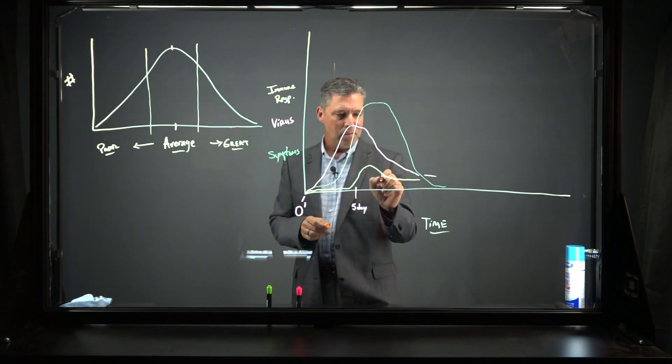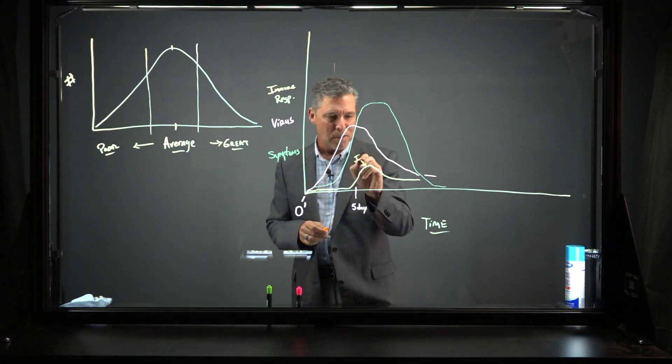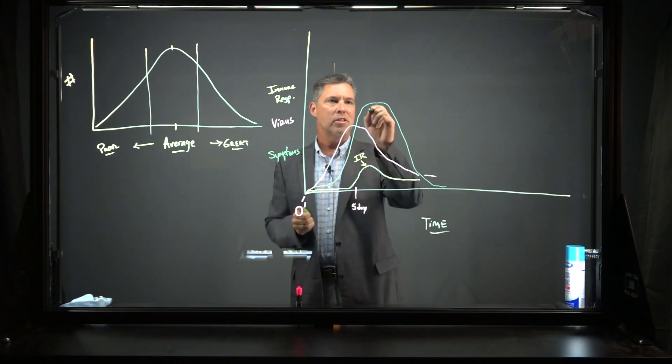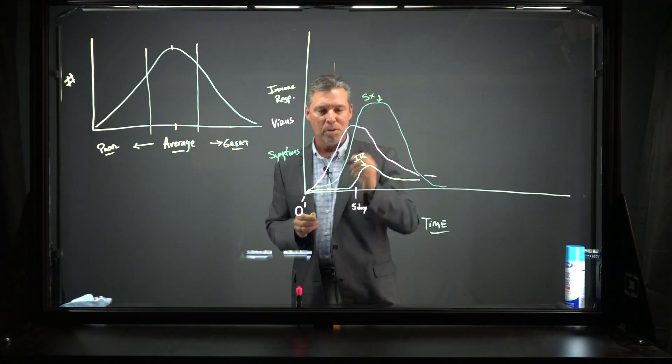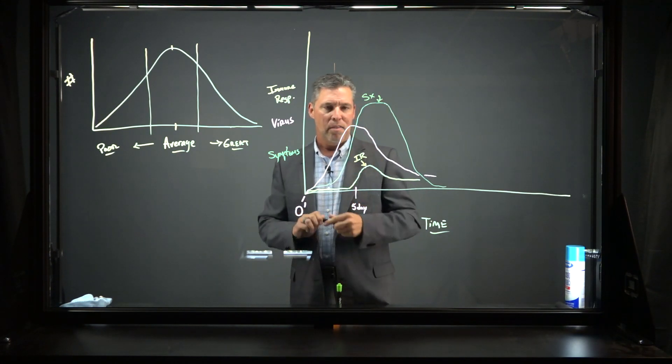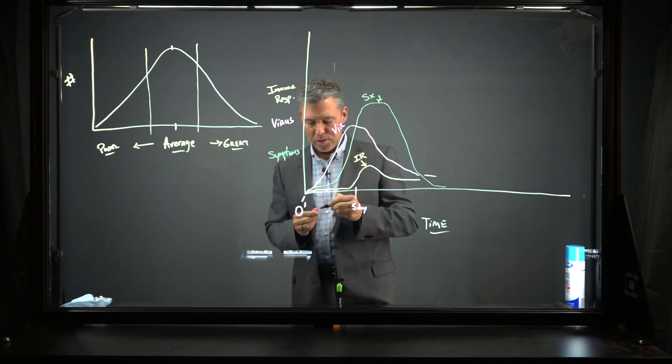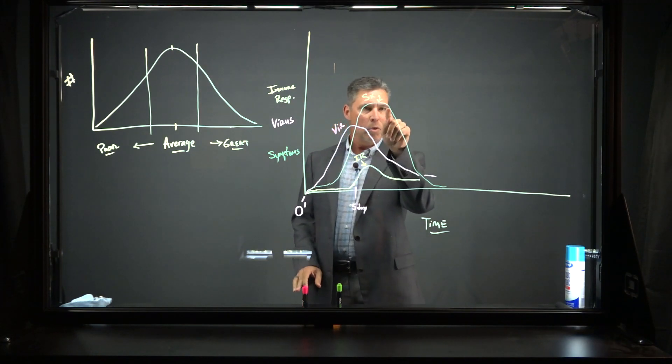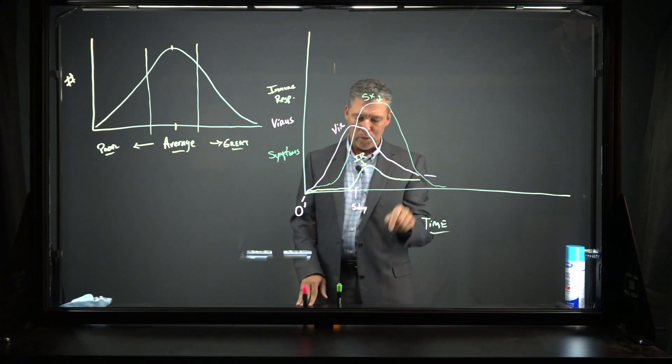So this bottom line is immune response right here. This green line, these are your symptoms, we usually abbreviate that with an X. And then this is viral load here, virus. You can see that the immune response is ultimately what's going to drive the dissolution of symptoms and also get rid of the viral load from your body.